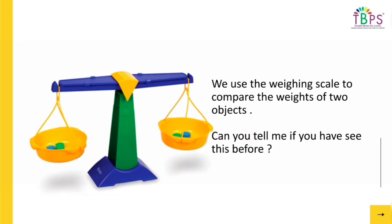What do we use to weigh objects, children? We use the weighing scale to compare the weights of two objects. We've all seen it, right? When you go to your grocery store or to a supermarket, we always have weighing scales to measure the weights. You will mostly see the digital version of it. The next time you go to a grocery store, always check the measurements or the weights.